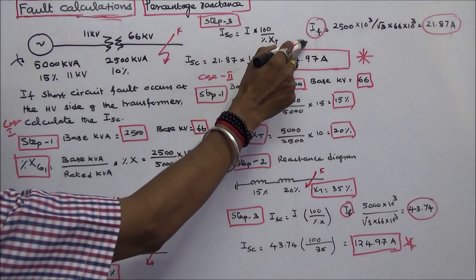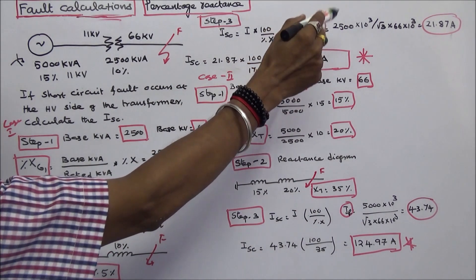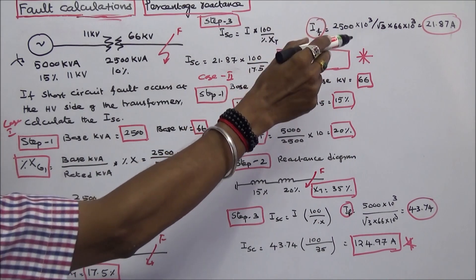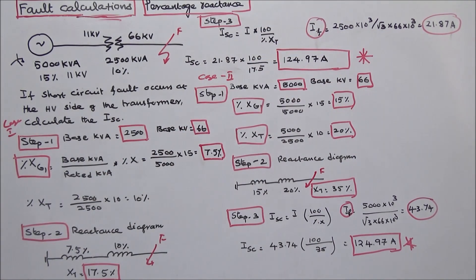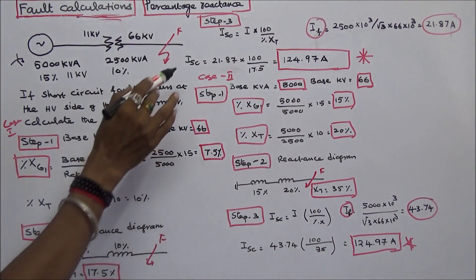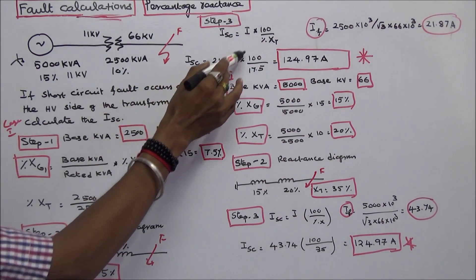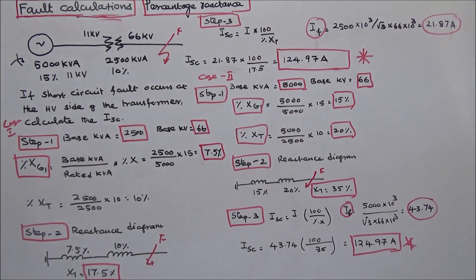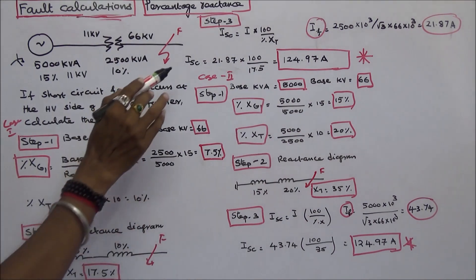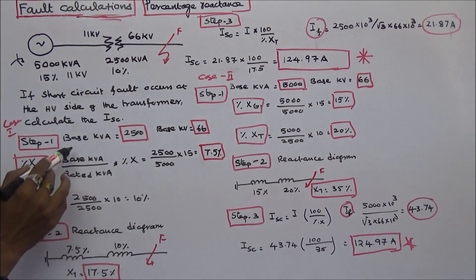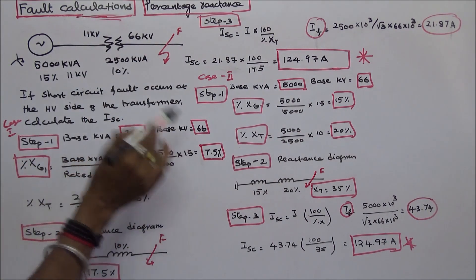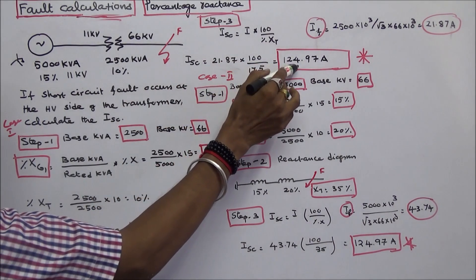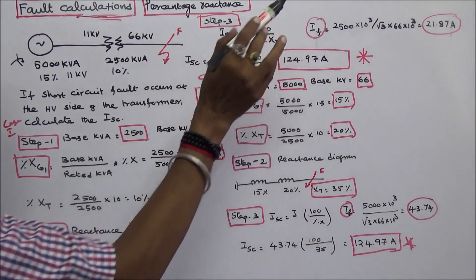Full load current is equal to (2500 × 10³) divided by (√3 × 66 × 10³), which equals 21.87 amps. Therefore, short circuit current is equal to 21.87 × 100 divided by 17.5. The short circuit current with base kVA of 2500 and base kV of 66 is equal to 124.97 amps.